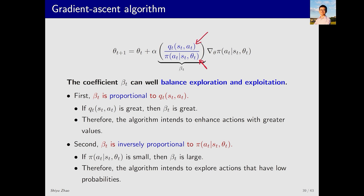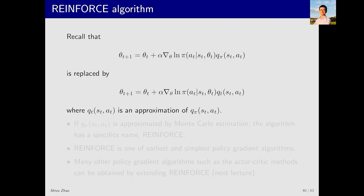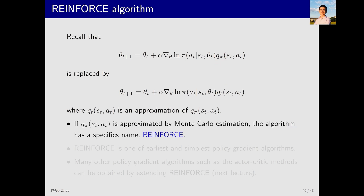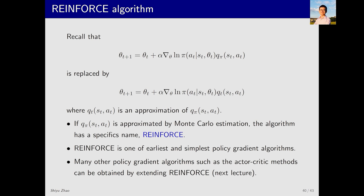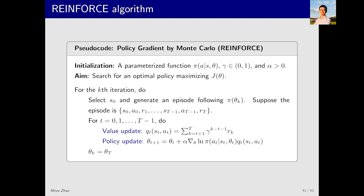Beta_t ensures that both exploration and exploitation are well balanced. Now let's look at a specific algorithm. Q_t approximates Q_pi, estimated using either Monte Carlo or temporal difference methods. If we use Monte Carlo, Q_t is the return G_t from an episode starting at (s_t, a_t). In this case the policy gradient algorithm is called REINFORCE — the simplest and earliest policy gradient algorithm.